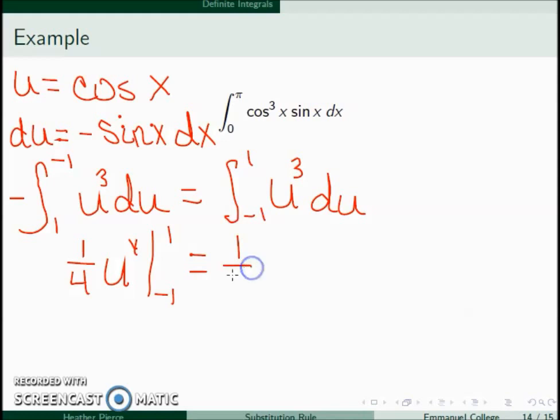So we get 1 over 4 times 1 to the 4th minus 1 over 4 times negative 1 to the 4th, which turns out to be 0.